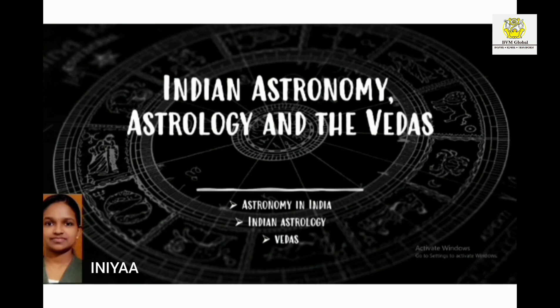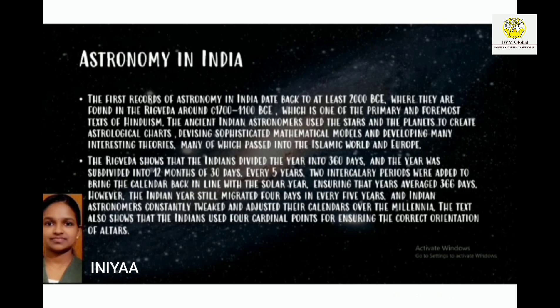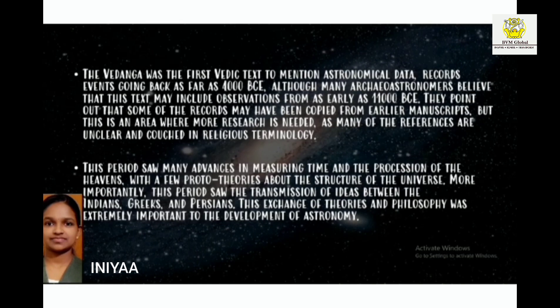Sinia from Class 8B here to talk about Indian Astronomy, Astrology and the Vedas. The first records of astronomy in India date back to at least 2000 BCE, found in the Rig Veda around 1700–1100 BCE, which is one of the primary and foremost texts of Hinduism. The ancient Indian astronomers used the stars and planets to create astrological charts, devising sophisticated mathematical models and developing many interesting theories, many of which passed into the Islamic world and Europe.